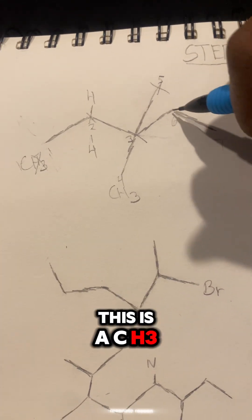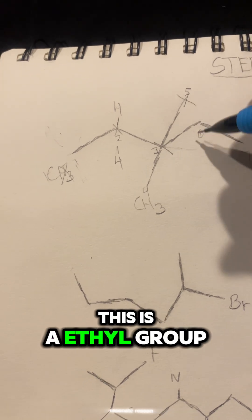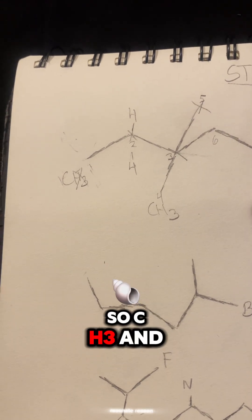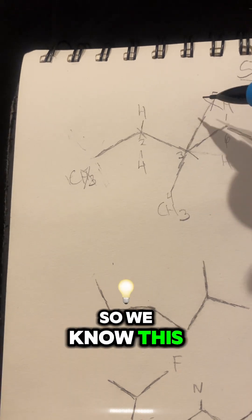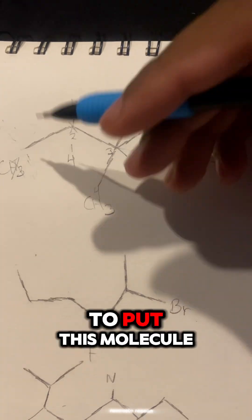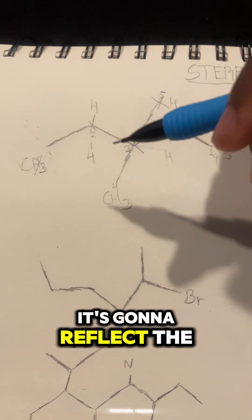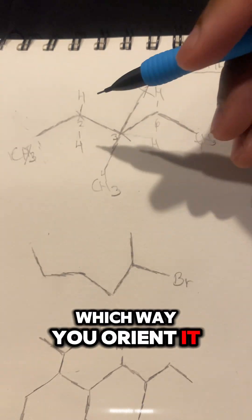Same goes for this, this is a CH3. This is an ethyl, so CH3, and then this has two hydrogens attached to it. So we know this entire molecule is achiral. So if you were to put this molecule inside of the mirror, it's going to reflect the exact same, no matter which way you orient it. Now let's look at the second one.